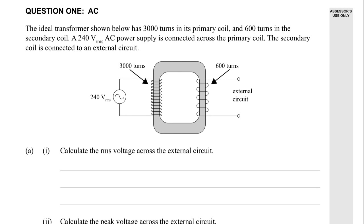Ideal transformer means we're going to get 100% of the power transmitted or transformed through the transmission. It has 3,000 turns on its primary coil, so it's stated there, and 600 turns on the secondary coil.